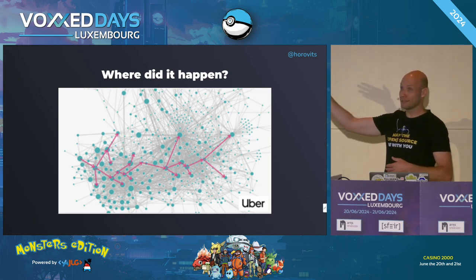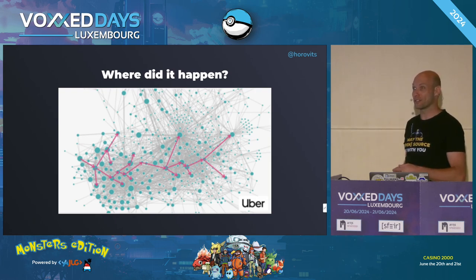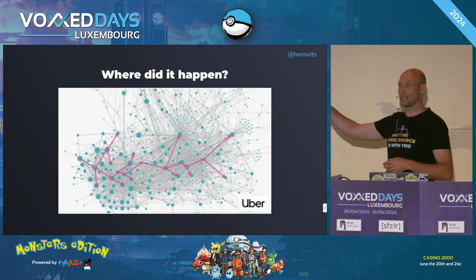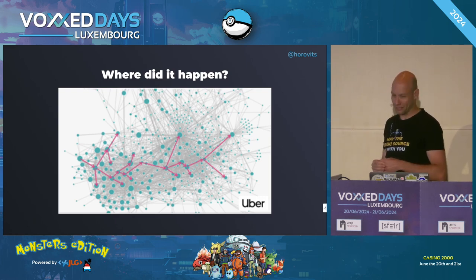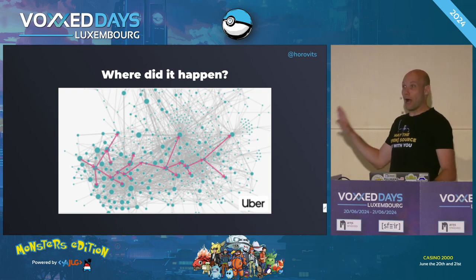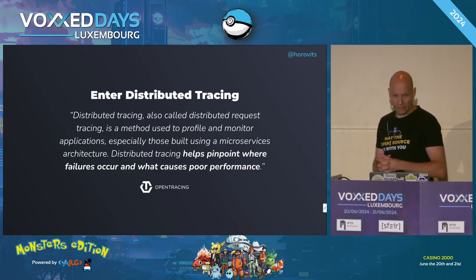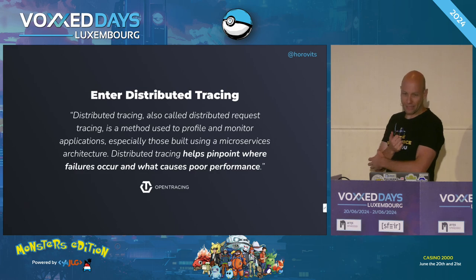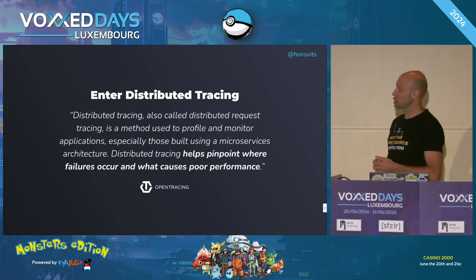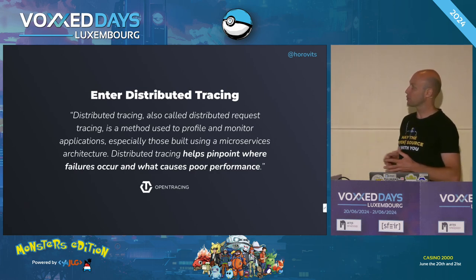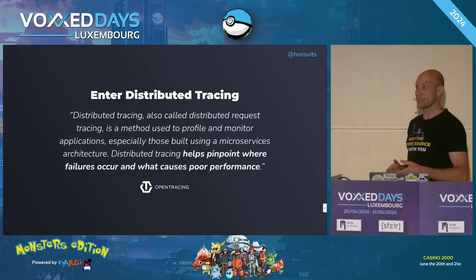That's a real screenshot from a subset of Uber's microservice architecture diagram. Just imagine trying to trace a hypothetical pink trace through that architecture. That's why we need distributed tracing. Distributed tracing is a method to profile and monitor microservice architecture applications, which helps — and this is the most important part — pinpoint where failures occur and what causes poor performance.